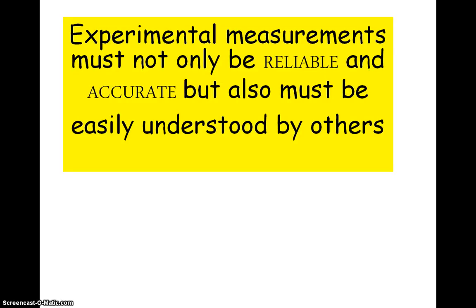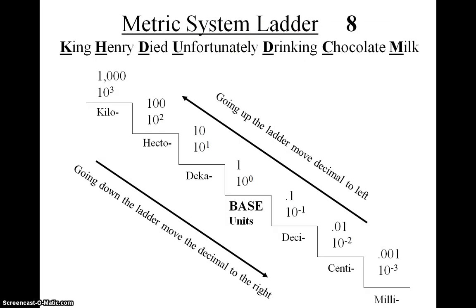In order to do this, using the correct instrumentation is really important. We'll learn about what kind of instruments most accurately measure volumes and grams and things like that. But also we need to have measurements that are easily understood by everyone and that's why in science we use the metric system. And you may have seen this before but there's a way of remembering the hierarchy of the metric system and it's King Henry died unfortunately drinking chocolate milk.